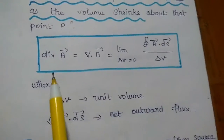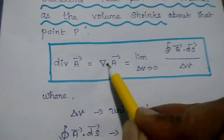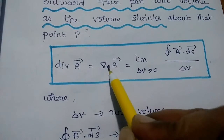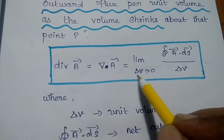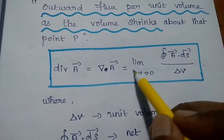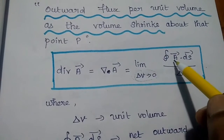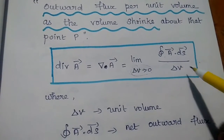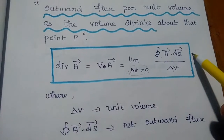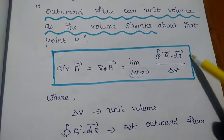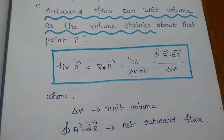Divergence of A vector is equal to del dot A. Here, this dot represents the divergence operation. Del dot A vector is equal to the limit as del V tends to 0 of the ratio of the closed surface integral of A dot dS divided by del V. Here, del V is the unit volume, and the surface integral is the outward flux. So that is the ratio of net outward flux per unit volume — how much outward flux is spreading out from that unit volume.